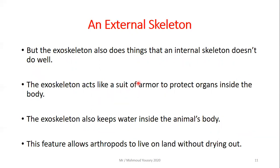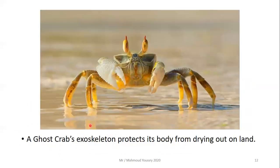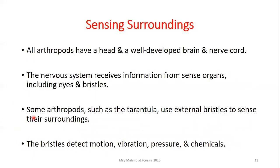The exoskeleton also does things an internal skeleton cannot. It acts like a suit of armor to protect the organs inside the body, and it keeps water inside the animal's body. This feature allows arthropods to live on land without drying out — for example, the ghost crab's exoskeleton protects its body from drying out on land.